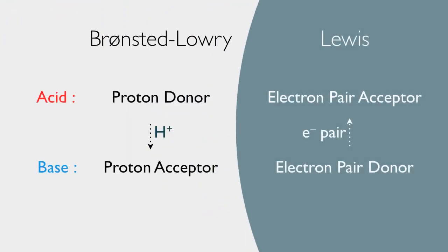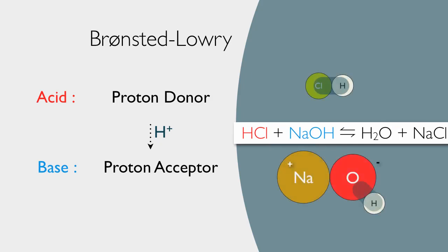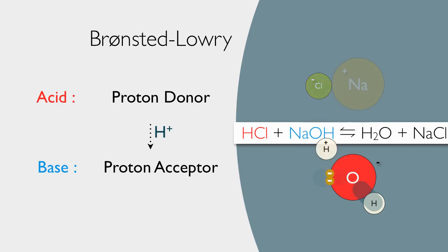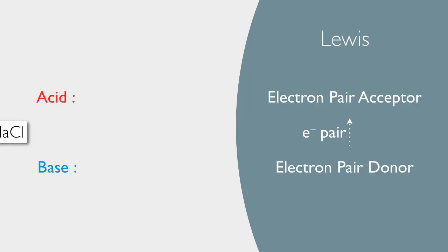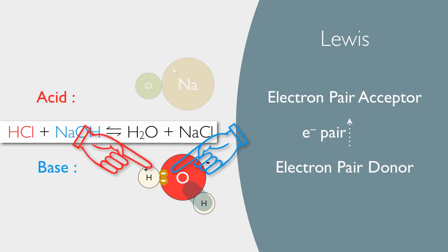Remember, we have two theories of acids and bases to learn. Let's compare the two. If we look first at just Bronsted-Lowry, using hydrochloric acid and sodium hydroxide as our example, there's our Bronsted-Lowry acid — hydrochloric acid with a proton ready to donate. And there's our Bronsted-Lowry base; the hydroxide group is accepting that proton. Now let's look at it from the Lewis point of view, the exact same reaction. There's our Lewis base — the hydroxide group has an electron pair to donate. And there's our Lewis acid; the proton is ready to accept those electrons. So the same reaction has the same acids and bases in both theories.